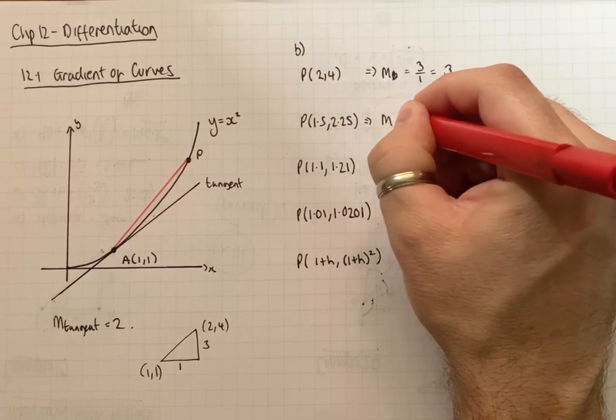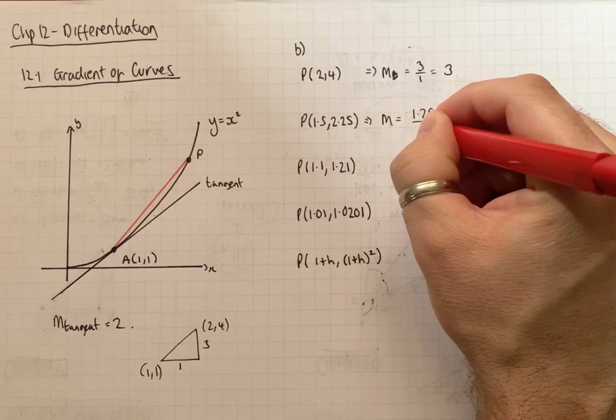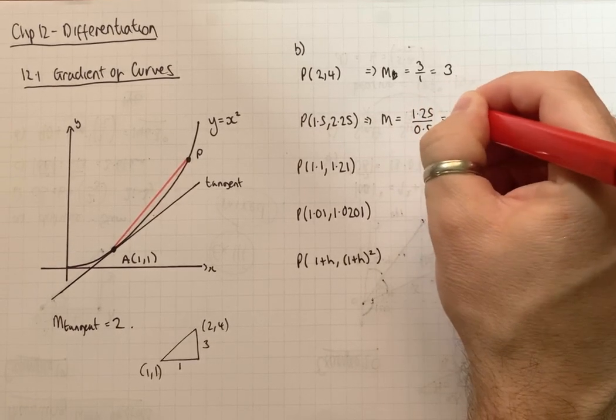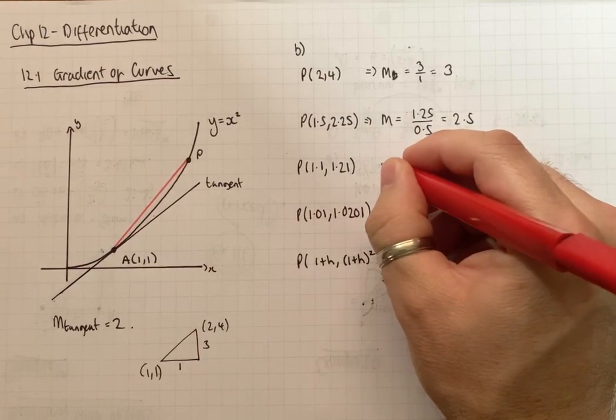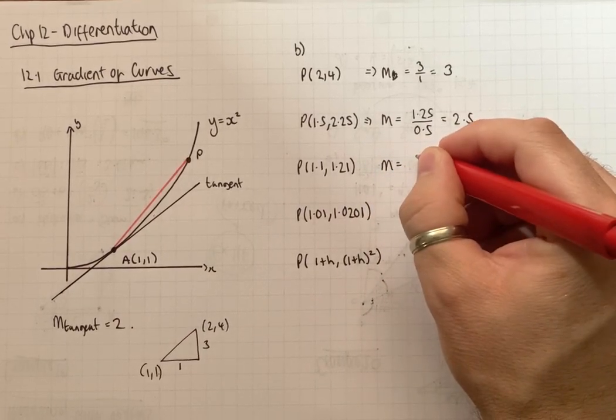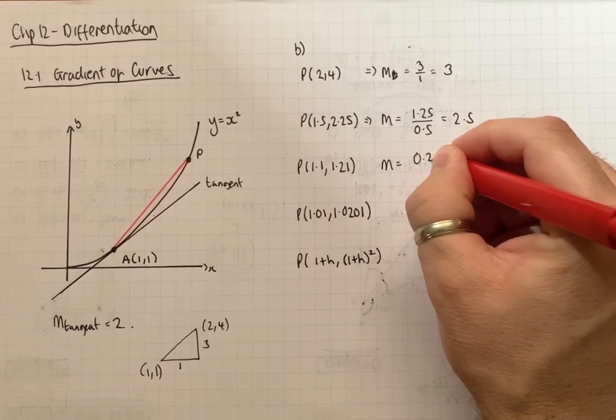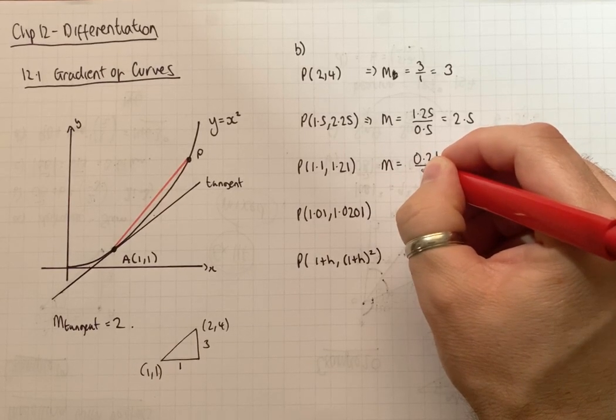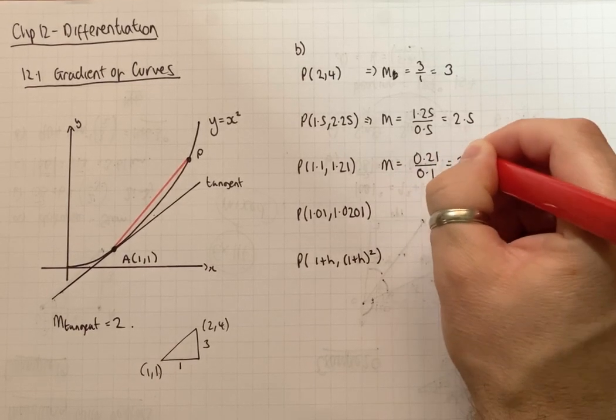So the gradient of this one is going to be 1.25 over 0.5 which is 2.5. The gradient of this one is going to be 0.21 over 0.1 which is 2.1.